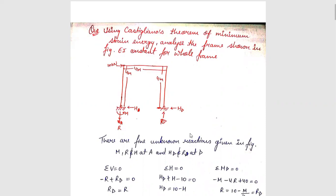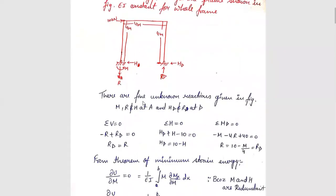We have to analyze the frame. We have all reactions: M, R, H, R, D. We have all the dimensions. EI is constant. Here we have five unknown reactions.